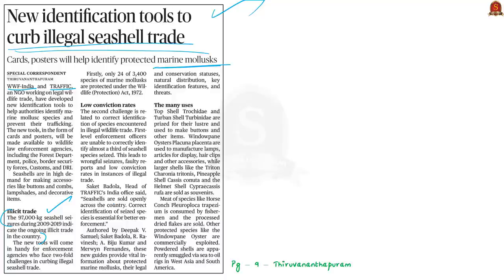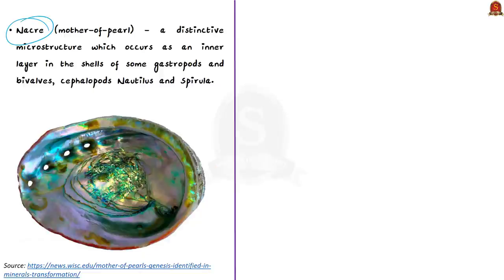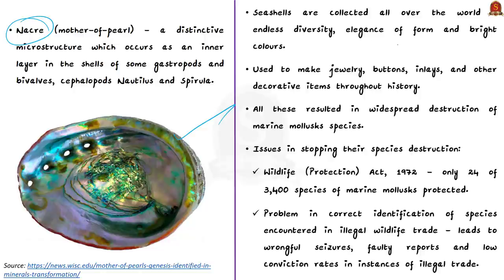A seashell is the hard exoskeleton of marine mollusks such as snails, bivalves, and chitons. These exoskeletons protect and support the bodies of marine mollusks, and are composed largely of calcium carbonate secreted by the mantle — a skin-like tissue in the mollusk's body wall. Seashells are usually made up of several layers of distinct microstructures with differing mechanical properties, secreted by different parts of the mantle. One of the most distinctive microstructures is nacre, also known as mother of pearl, which occurs as an inner layer in shells of some gastropods and bivalves. Seashells are collected worldwide for their diverse range, elegance of form, and bright colors, and have been used to make jewelry, buttons, inlays, and decorative items throughout history.